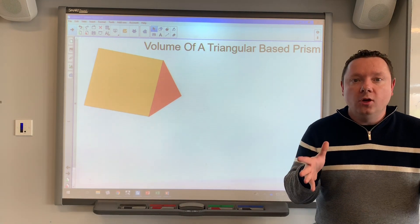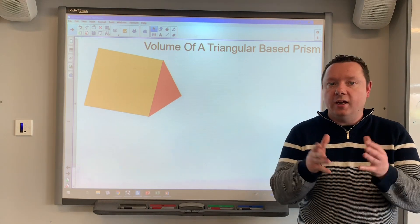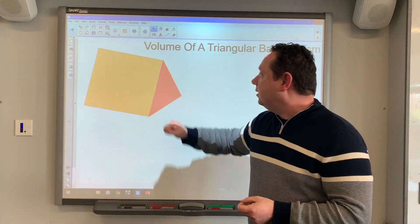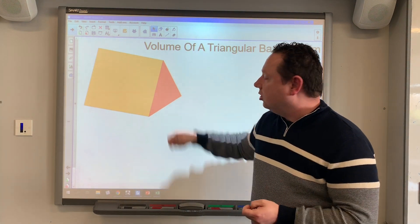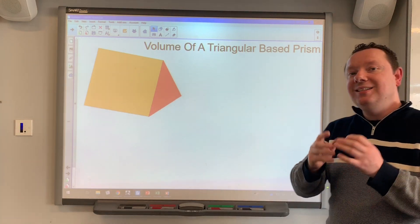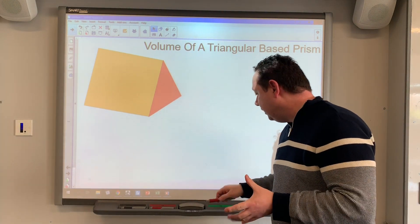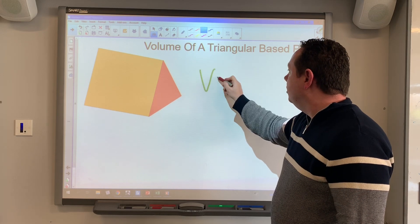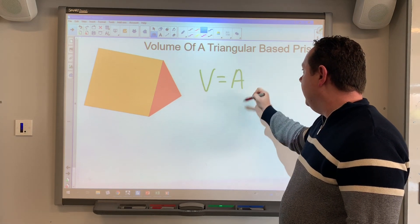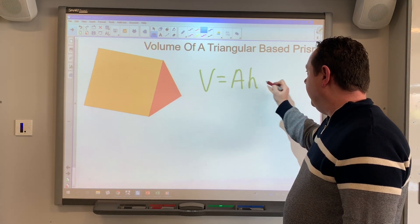So instead of it being like a cuboid where the cross section is a rectangle, this time with a triangular based prism the cross section is just a triangle. But it's exactly the same method. Yesterday we learned that to look at the volume of any prism we do the area of the cross section A times the vertical height H.